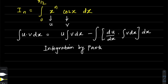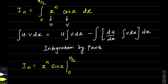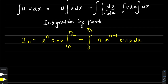Using IBP with u = x^n and v = cos(x): I_n equals x^n times sin(x) evaluated from 0 to π/2, minus the integral from 0 to π/2 of the derivative of x^n — which is n·x^(n-1) — times sin(x) dx.